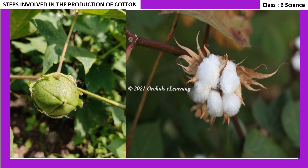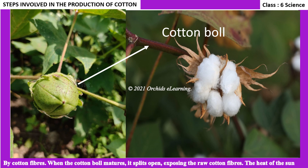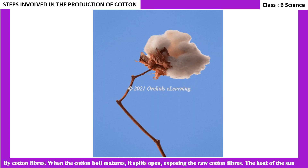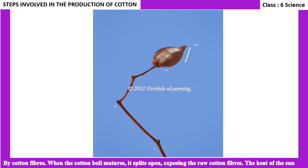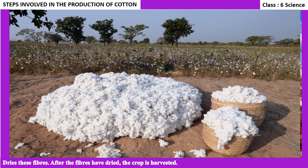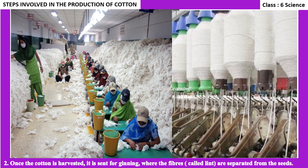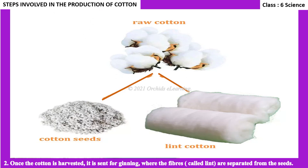The cotton plant has a small green fruit called the cotton boll. The boll has seeds inside, which are surrounded by cotton fibers. When the cotton boll matures, it splits open, exposing the raw cotton fibers. The heat of the sun dries these fibers. After the fibers have dried, the crop is harvested. Once harvested, the cotton is sent for ginning, where the fibers — called lint — are separated from the seeds.